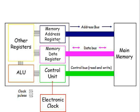The functions of both of these is that they can temporarily hold data. In particular, the memory address register holds the addresses which have to be accessed. The memory data register can store results of calculations, the data that's been read from main memory, and the data that's to be written to main memory.